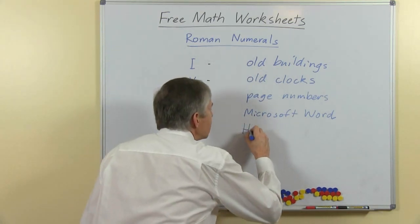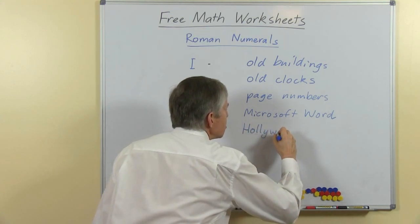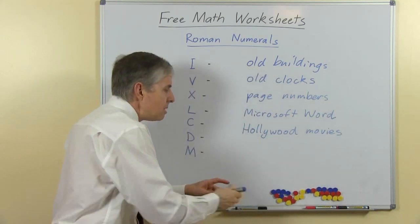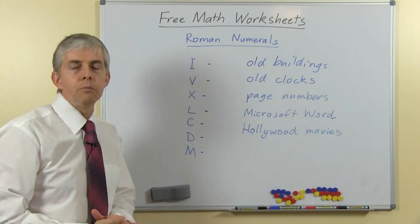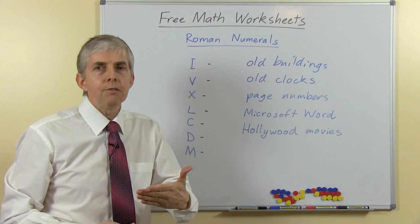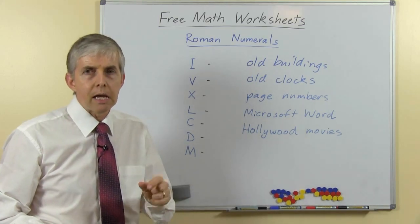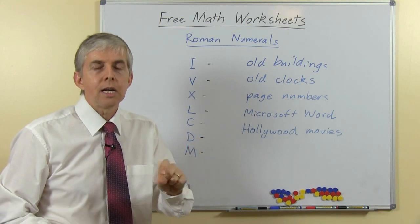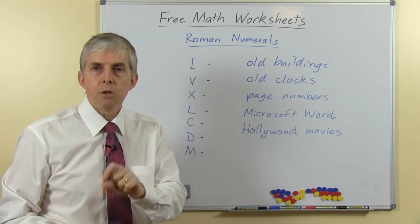And the last one you might have noticed yourself in Hollywood movies, not in the movie itself but at the end of the movie, right at the very end of the credits. There's quite often a Roman numeral at the end saying the year that the movie was made.